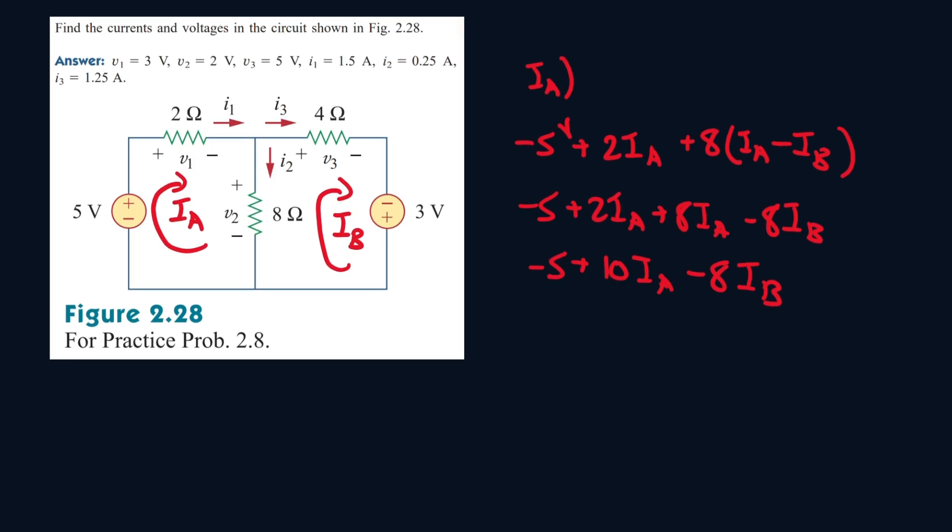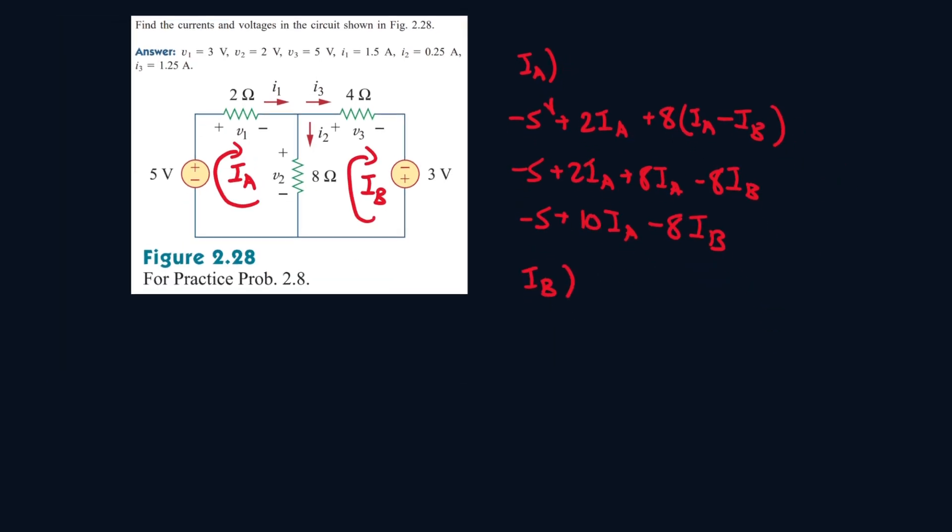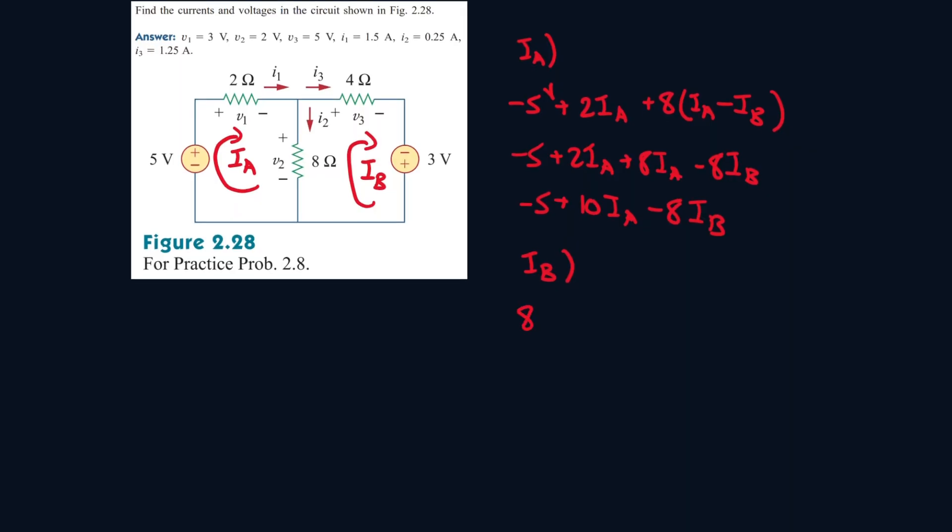Now let's do the next mesh. So it will be 8 IB minus IA, because IB is moving in this direction and IA is moving in the opposite direction, plus 4 IB plus 4 IB minus 3 volts, because it's entering the negative terminal first.